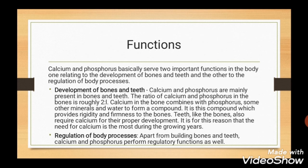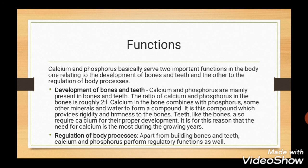We will first see the common functions of calcium and phosphorus and then their individual functions. There are two important common functions. First is development of bones and teeth. Calcium and phosphorus are mainly present in bones and teeth. The ratio of calcium to phosphorus in the body is roughly 2:1. Calcium in bone combines with phosphorus, some other minerals and water to form a compound that provides rigidity and firmness to bones. Teeth also require calcium for their proper development, so calcium's need is greatest during the growing years. The second function is regulation of body processes.